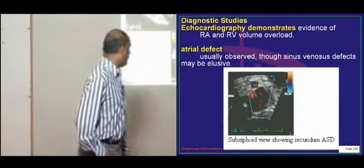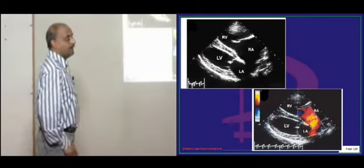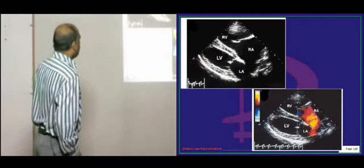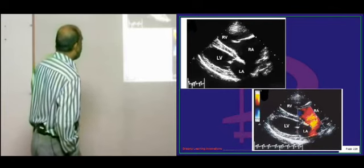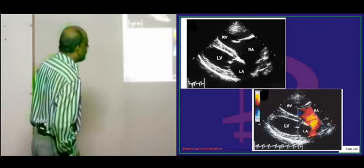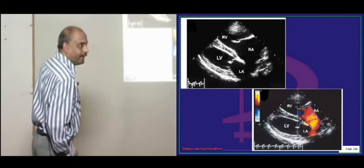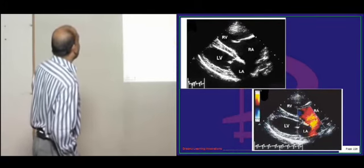Echocardiographic appearance in the case of atrial septal defect: the right ventricle into the right atrium and left ventricle and left atrium. Between the two, the septum is basically defective. If you conduct the Doppler, you can also observe the flow pattern which is from the right atrium into the left atrium.